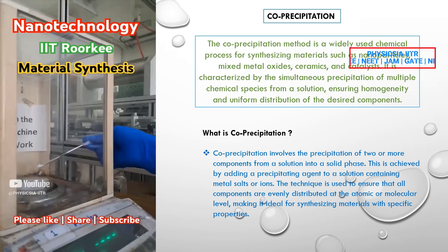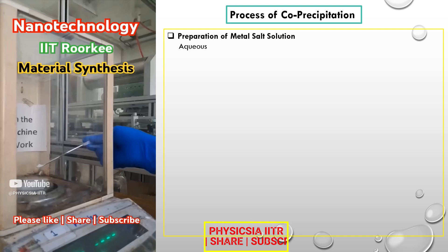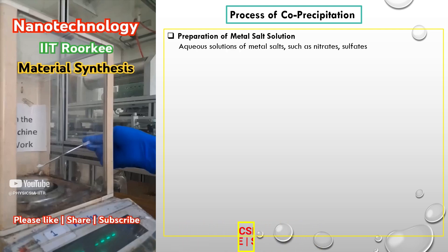Now we will see the processes involved in this method. Step 1: Preparation of Metal Salt Solution — aqueous solutions of metal salts, such as nitrates, sulfates, or chlorides, are prepared.